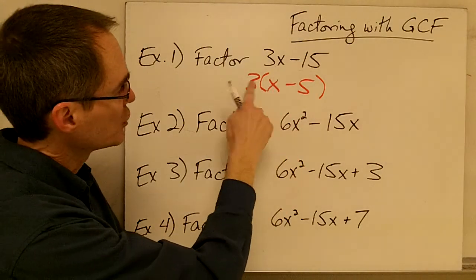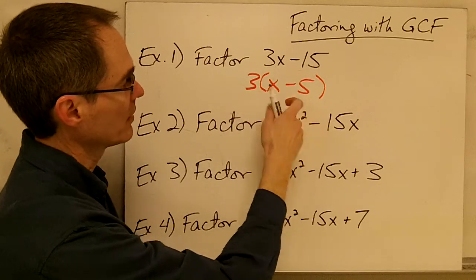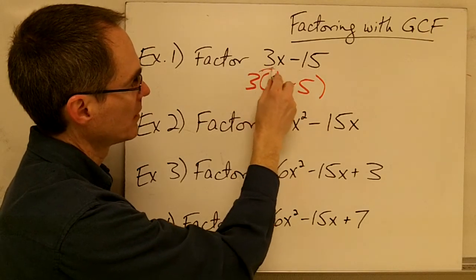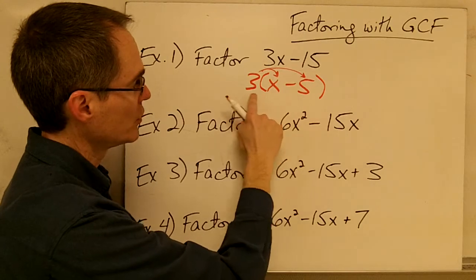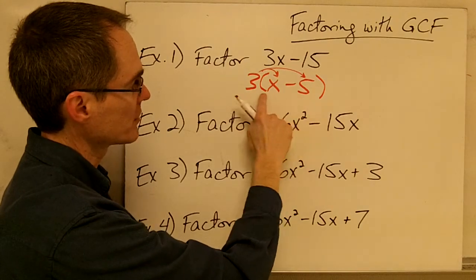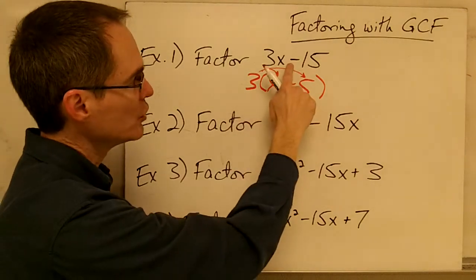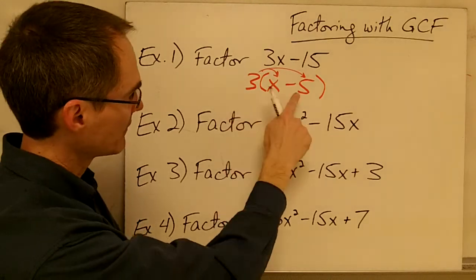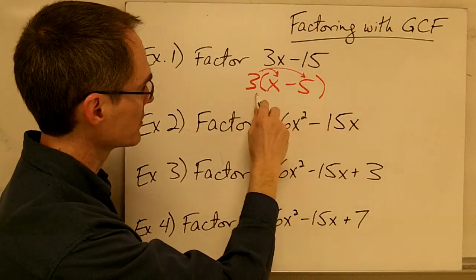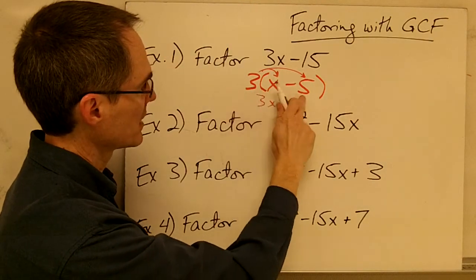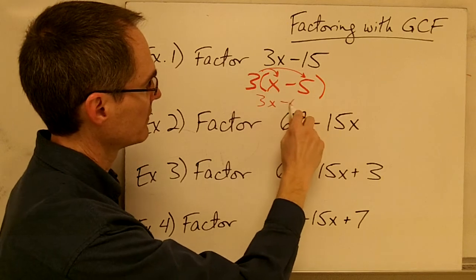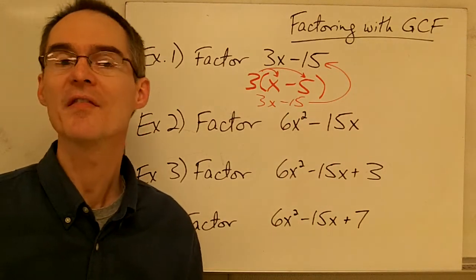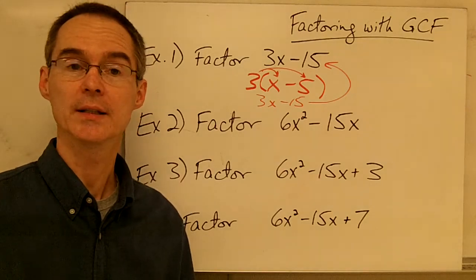Notice you can always check yourself on these kinds of problems, because once you have finished factoring, you can check yourself by using the distributive property and see if when you distribute through and do that multiplication, you get the same expression you started with. 3 times x is 3x, 3 times negative 5 is negative 15 — and sure enough, that's exactly what I started with. So I know I factored that expression correctly.